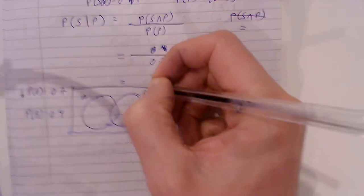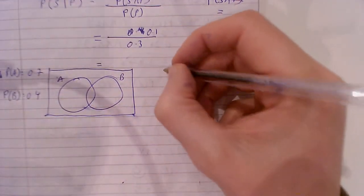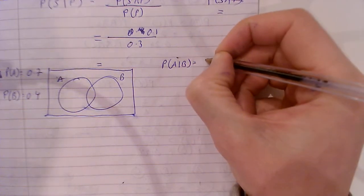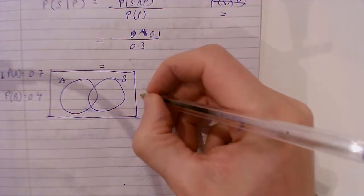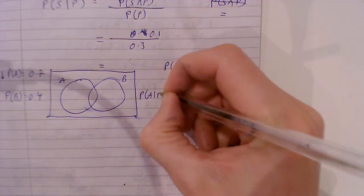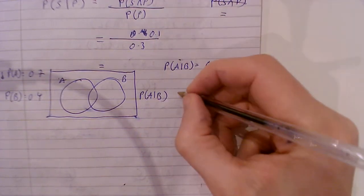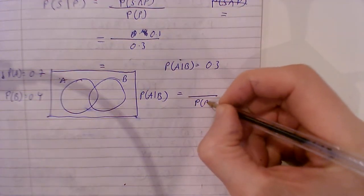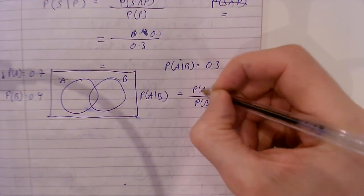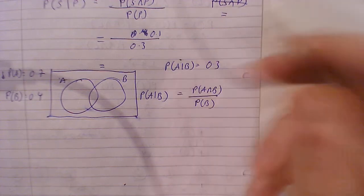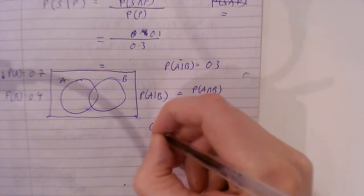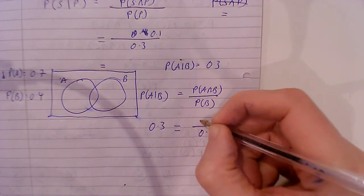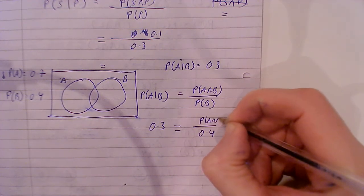If the question gives me P(A|B) is 0.3, the very first thing you should write down is the formula. That means B goes on the bottom, P(B), and P(A∩B) which is what we're looking for. That's 0.3. The probability of B is 0.4, so P(A∩B) equals 0.3 multiplied by 0.4, which is 0.12.